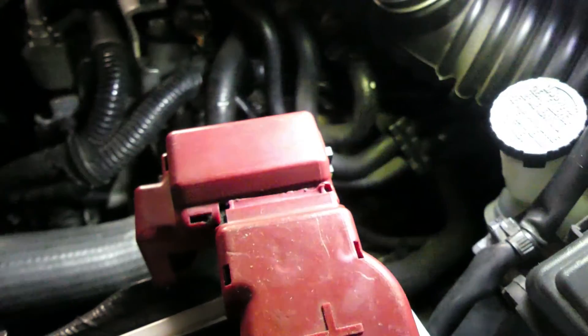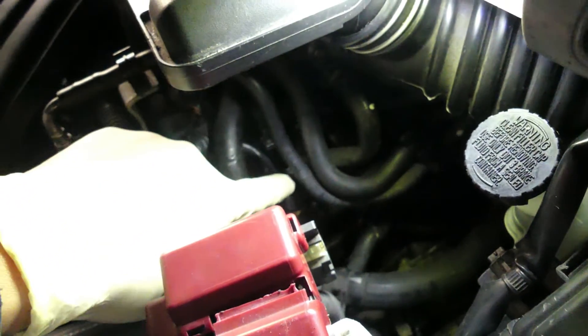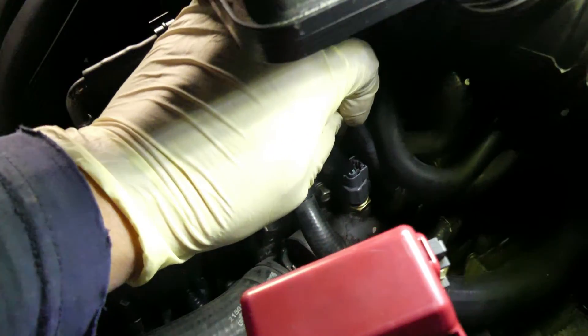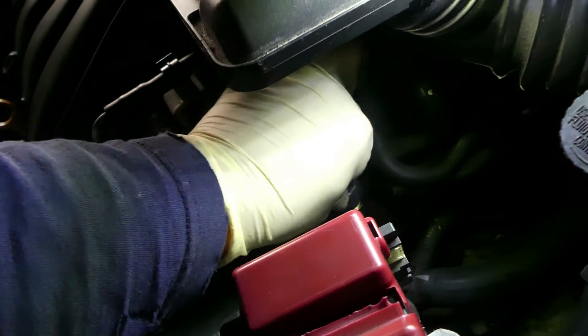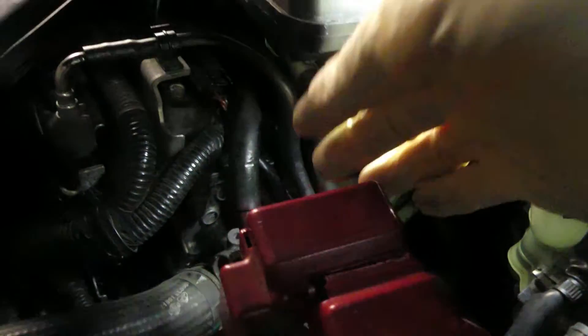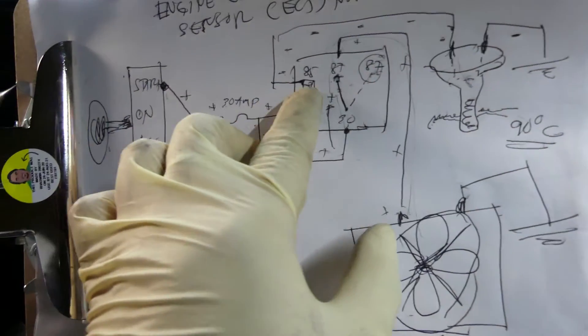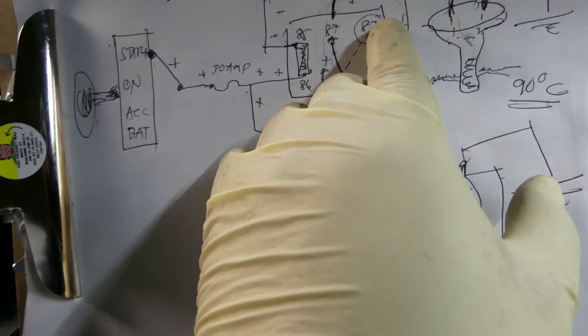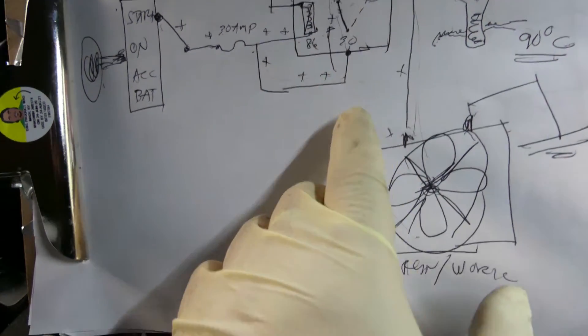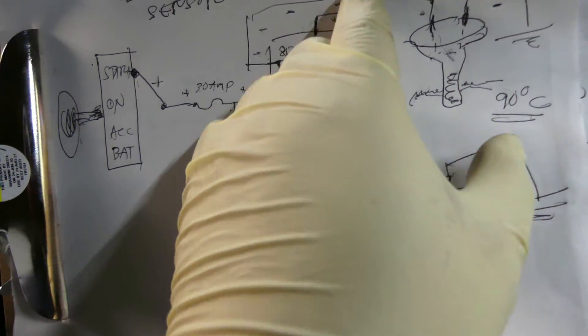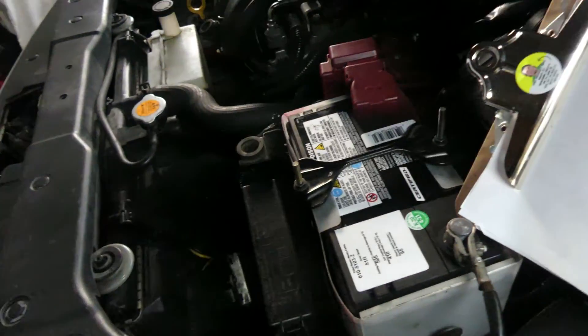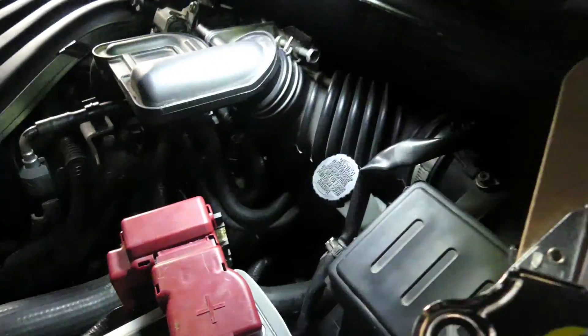That's our sensor right there. I'll disconnect it — there we go, disconnected already. As you can see, the radiator fan is working now. What happened is that when we disconnected the two wires, the coil lost its negative path, so the relay contact went back from number 87 to number 87A, giving a direct positive feed to the fan motor. That is how the normally closed ECT sensor works.